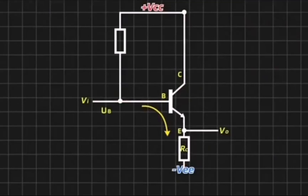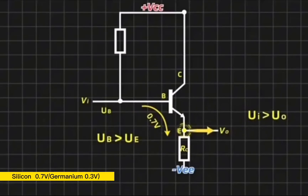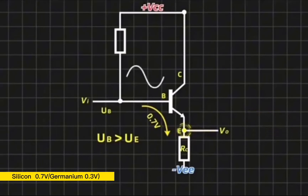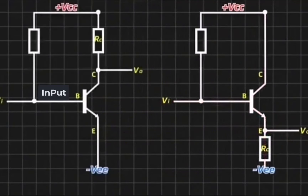If the output load is connected to the emitter, the transistor will conduct when positive current flows to the base. The positive voltage must be greater than 0.7 volts, so the voltage output to the load is smaller than the input. But the larger the base current signal, current from both the collector and base will flow to the emitter together, so the current flowing out of the emitter will be larger.